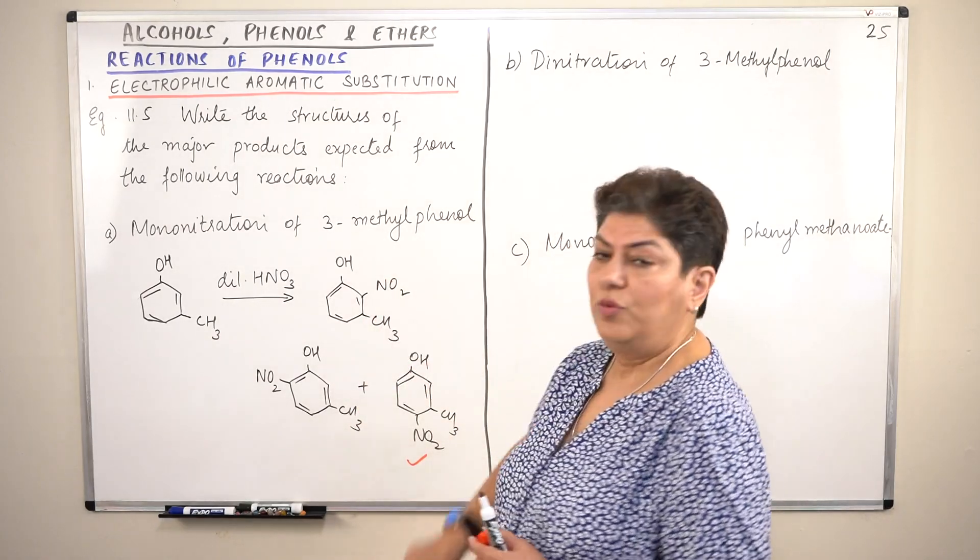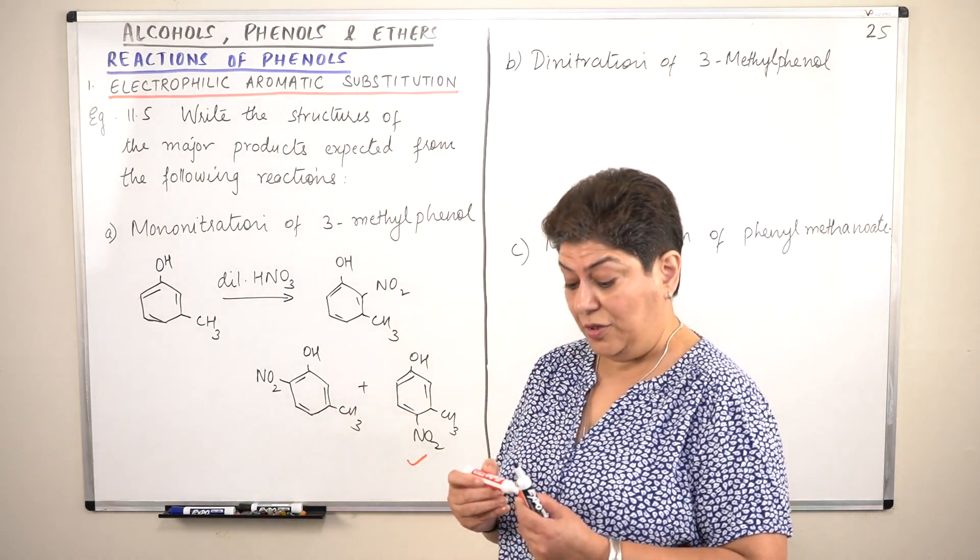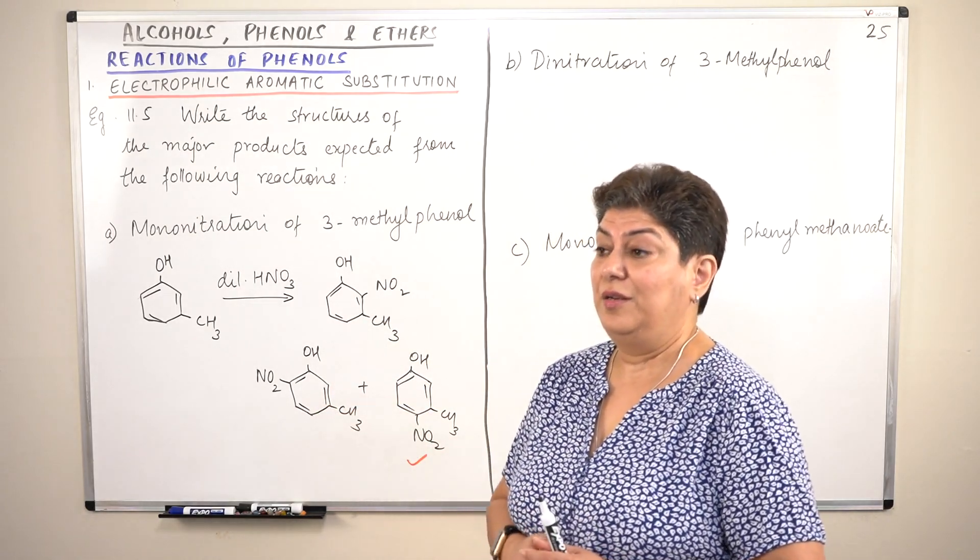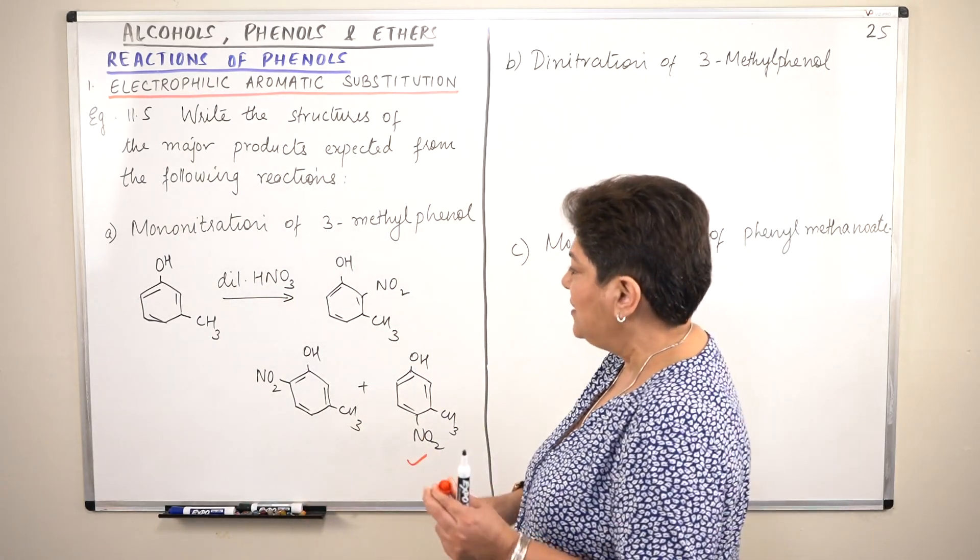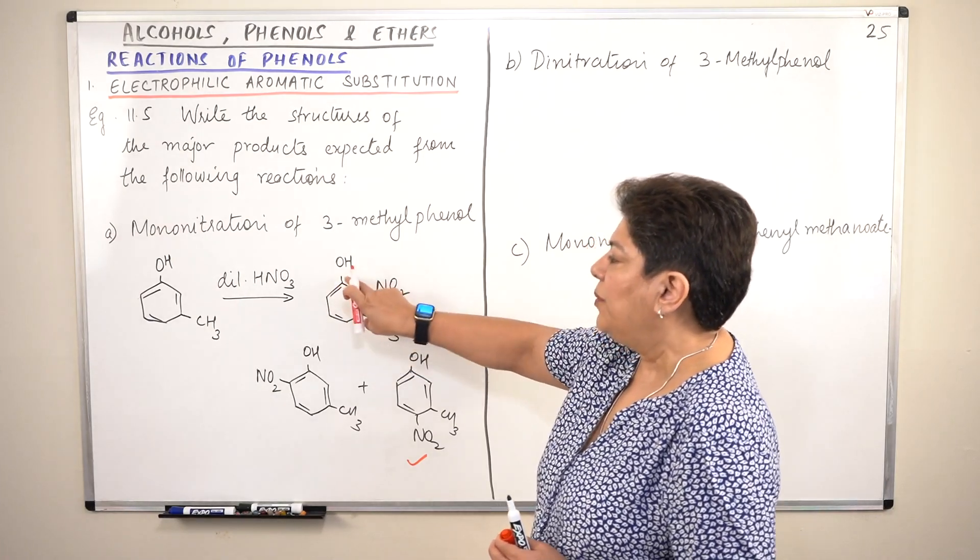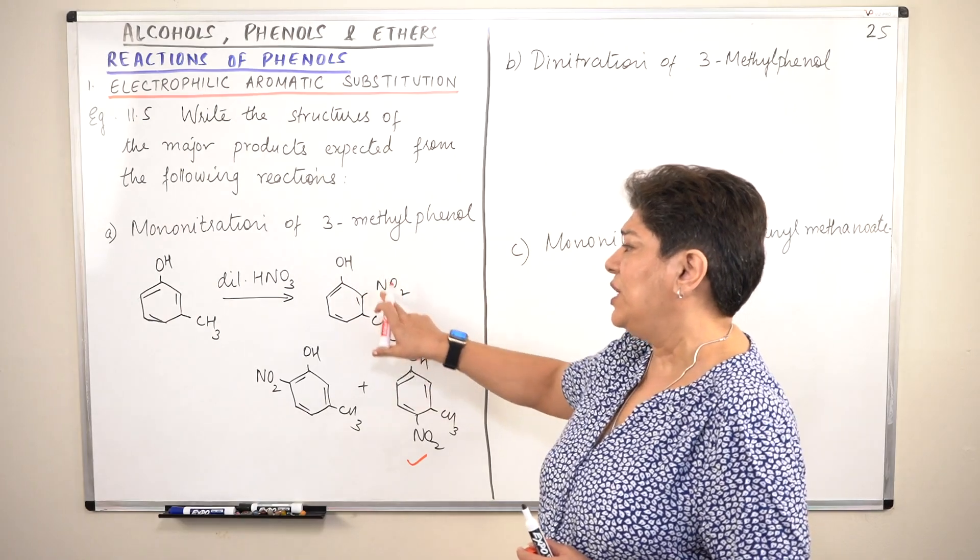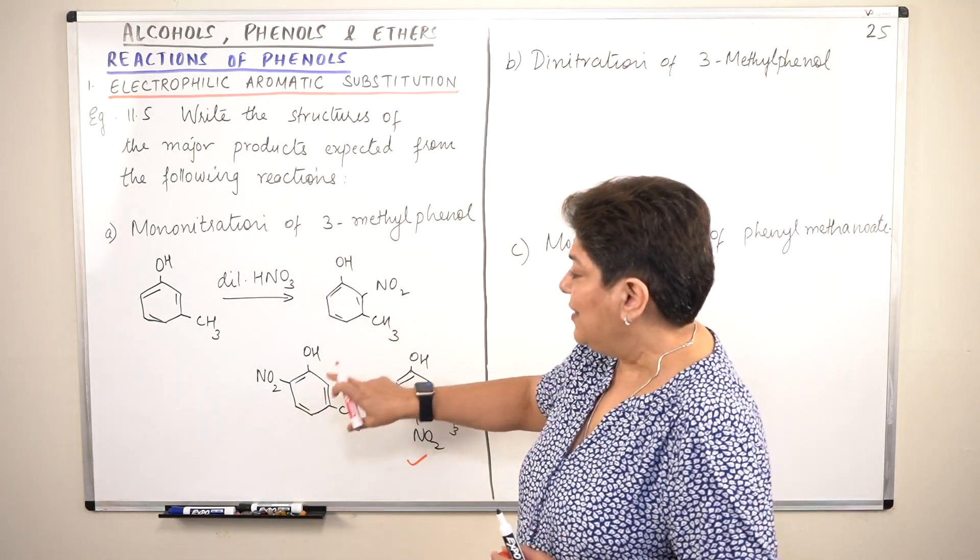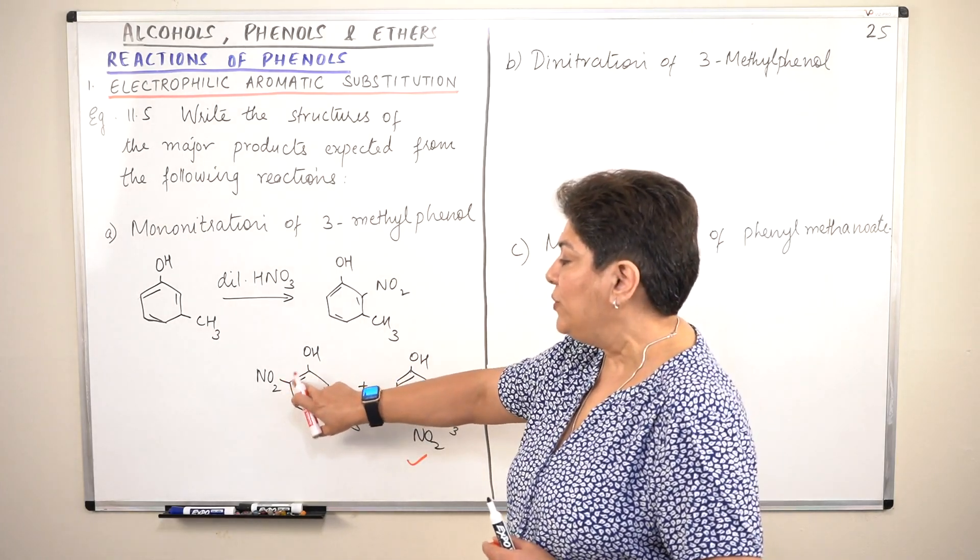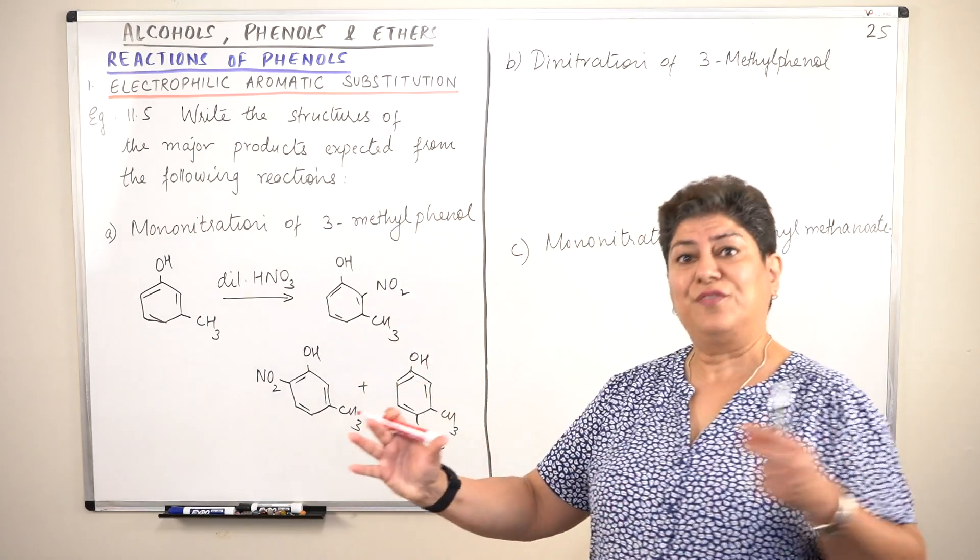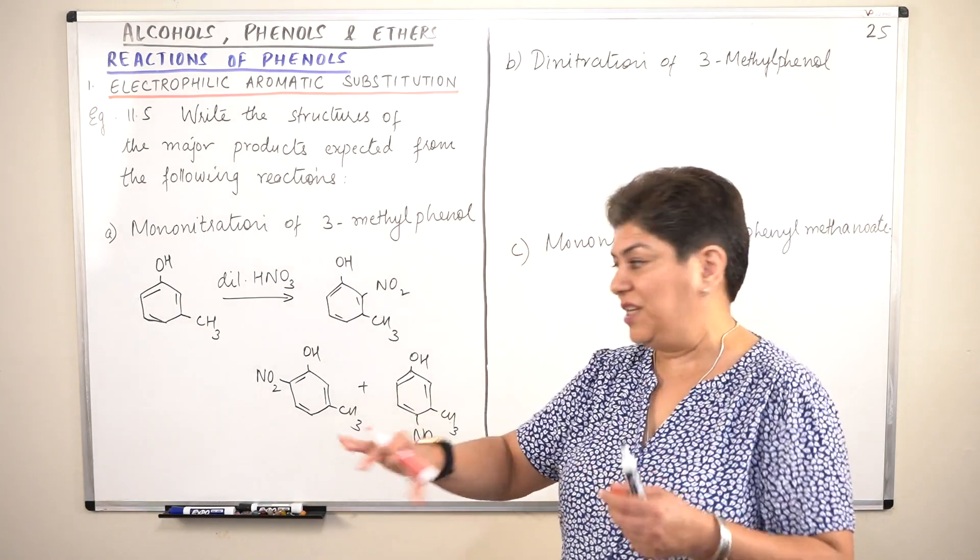Out of these two, which one do you think would be the major product? This or this? Here, think of the movie hall where the seats were occupied, or the train or the bus. Three adjacent carbons having three groups attached to them. Too many atoms in very little space. But here, OH is here, CH3 is on third carbon. Although NO2 is on the second carbon from this side, but the CH3 is far away from it. So there is more distance between the incoming groups here.